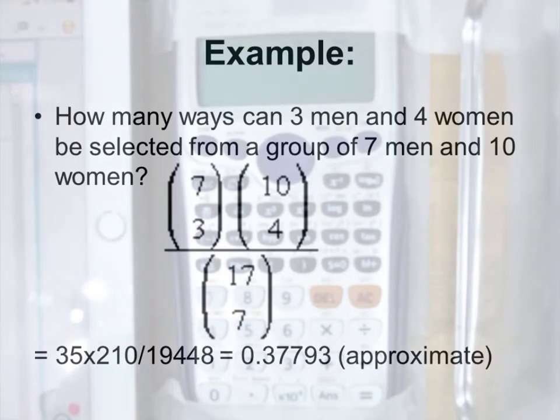In this scenario, we have 17 people. Out of the 17 people, 7 are men and 10 are women. We need to select 3 men and 4 women from this group.